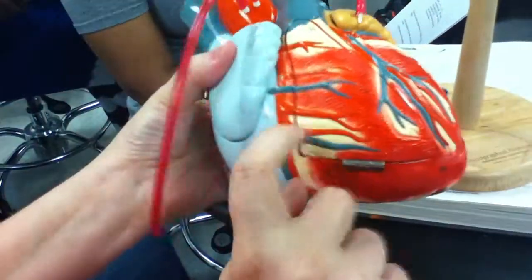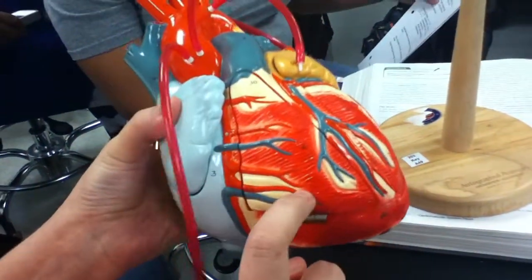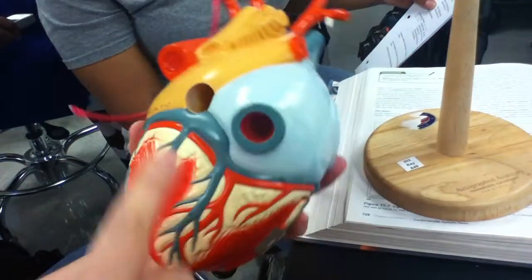The right marginal artery is here. The small cardiac vein is here.